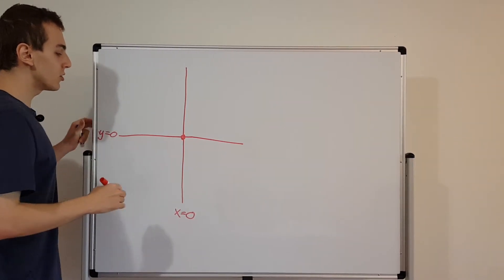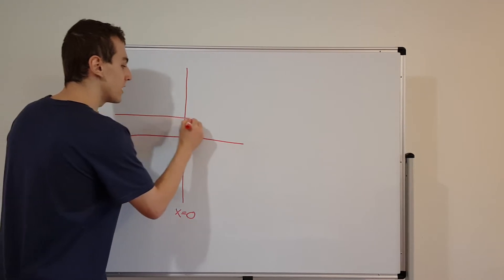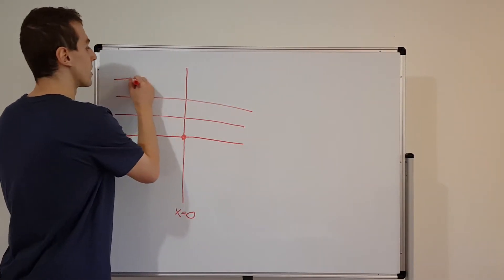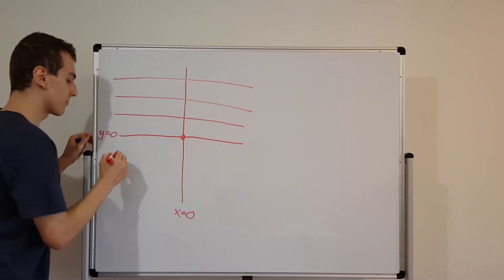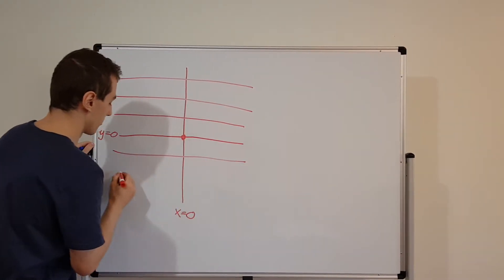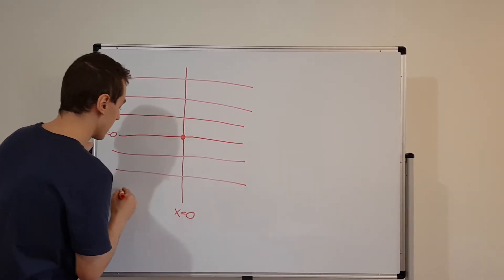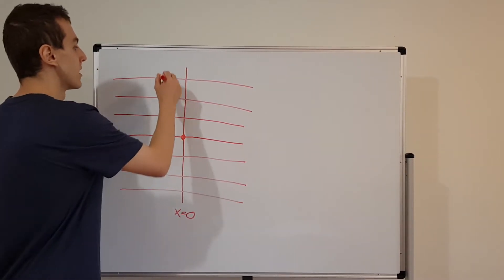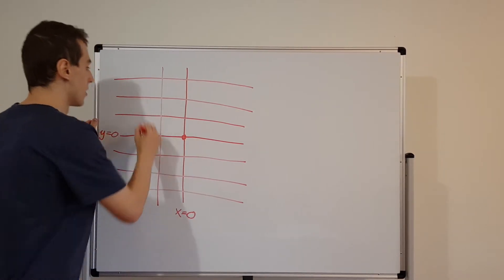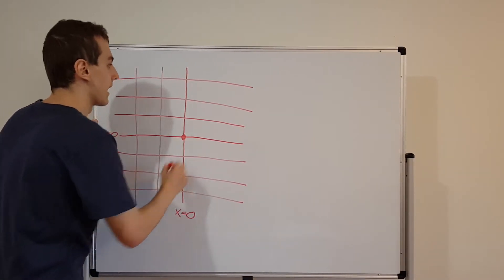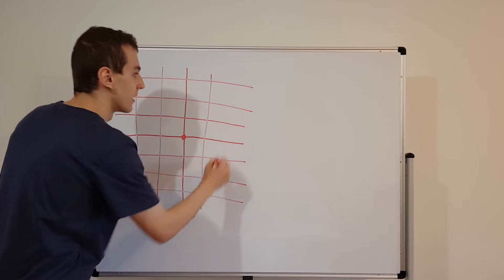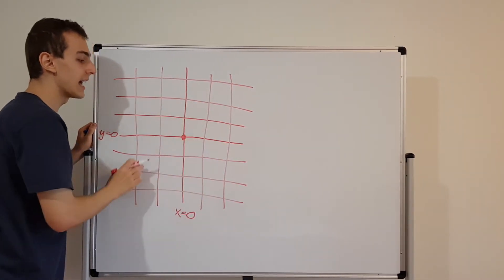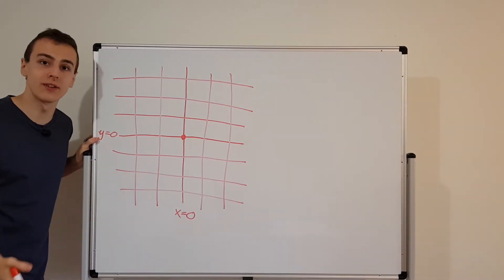Now we can draw the other grid lines. I'll draw them as straight as possible. These are the horizontal grid lines, and I'll draw a few more down here. Now let's add in some vertical grid lines — maybe two over here and another two over here. This is a grid, and every point on this grid has an associated x and y value.